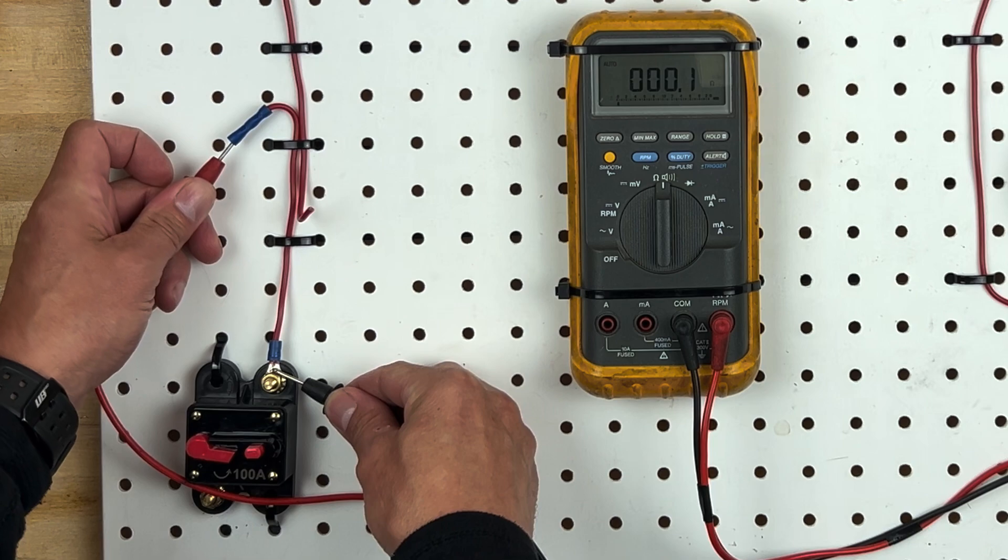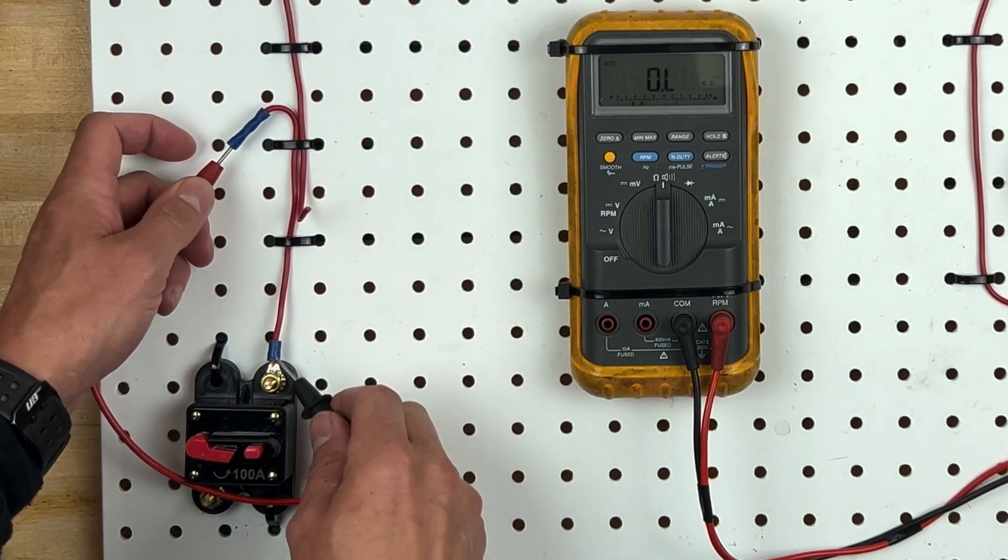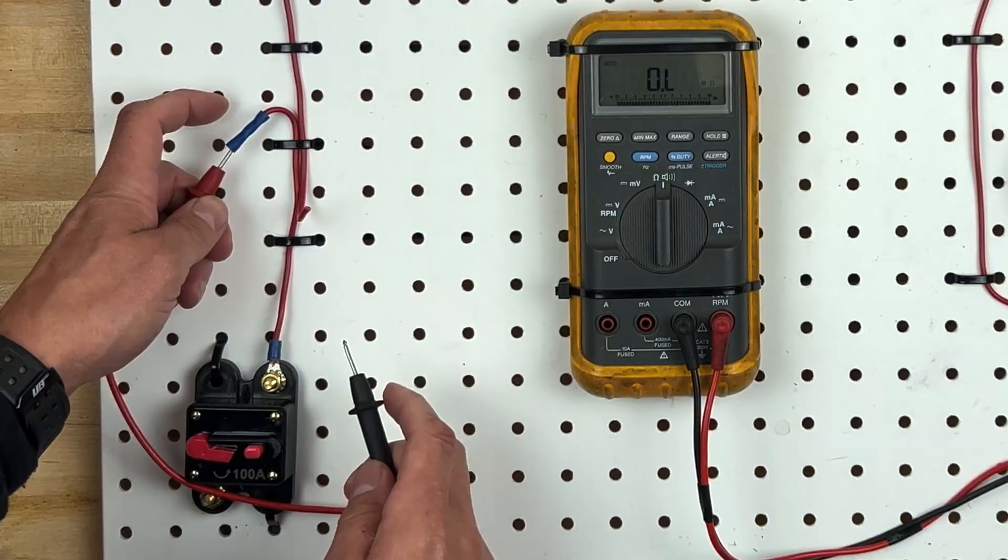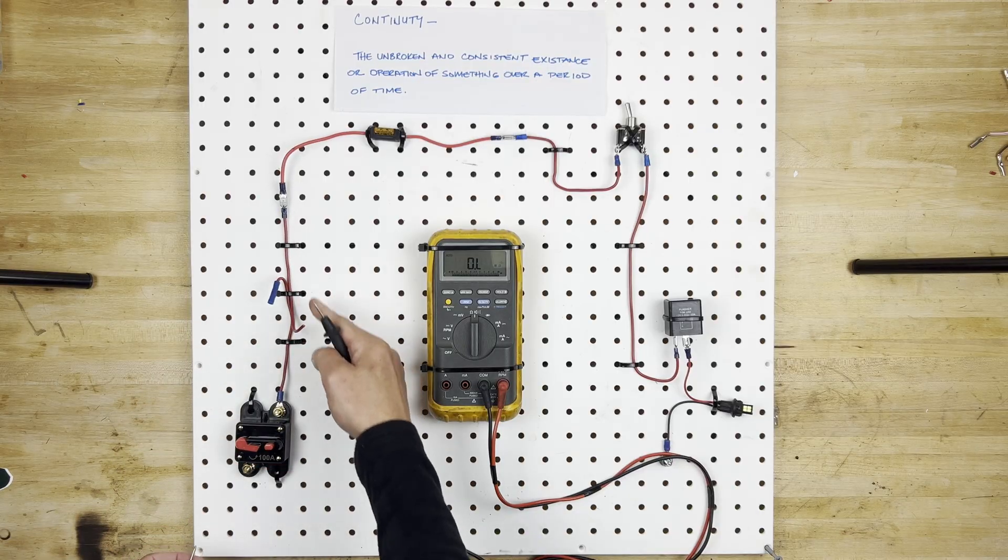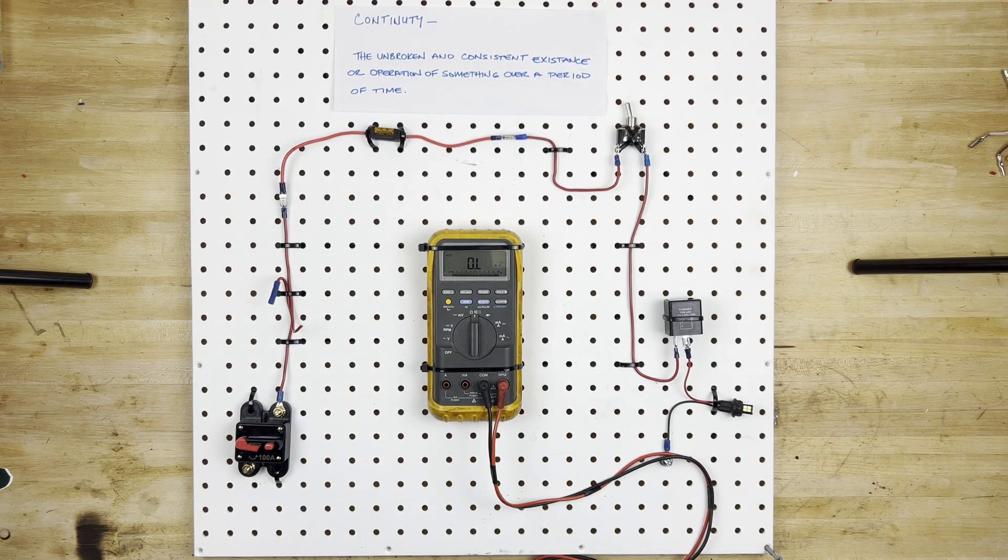So there is continuity coming out of this terminal, going through the wire and into the butt connector, but it's obviously not going out the butt connector further down the circuit.